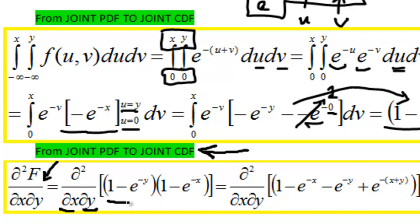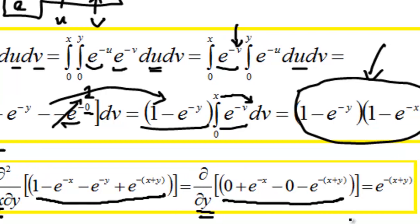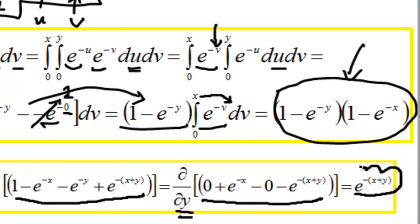So for instance, this is our joint CDF. I have multiplied these terms by themselves here because it's just easier to deal with the differentiation. I first differentiate with respect to x and I got this and then with respect to y and I got our joint PDF.